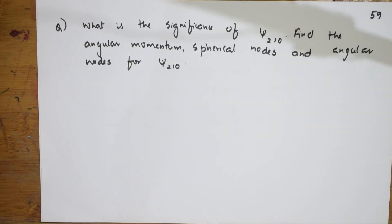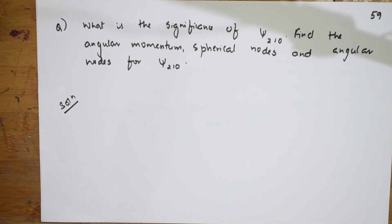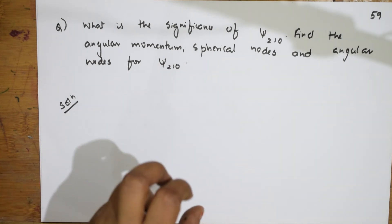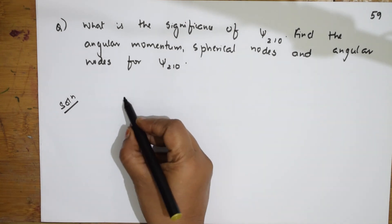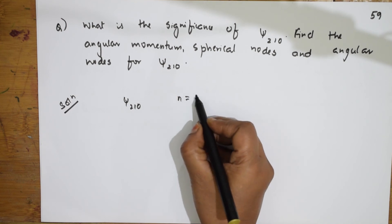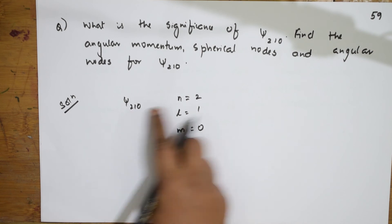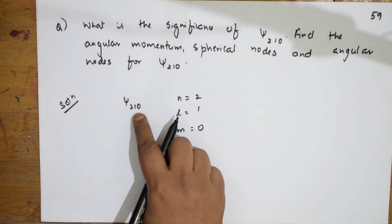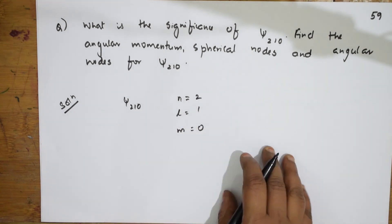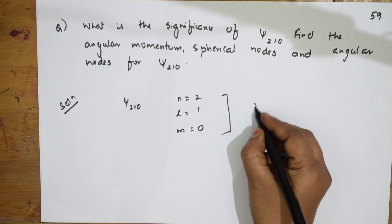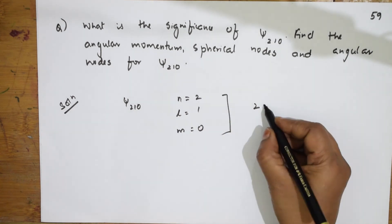Last numerical: what is the significance of ψ₂₁₀? Find angular momentum, spherical nodes, and angular nodes for ψ₂₁₀. The notation ψ₂₁₀ means n=2, l=1, m=0 — this corresponds to a 2p orbital.